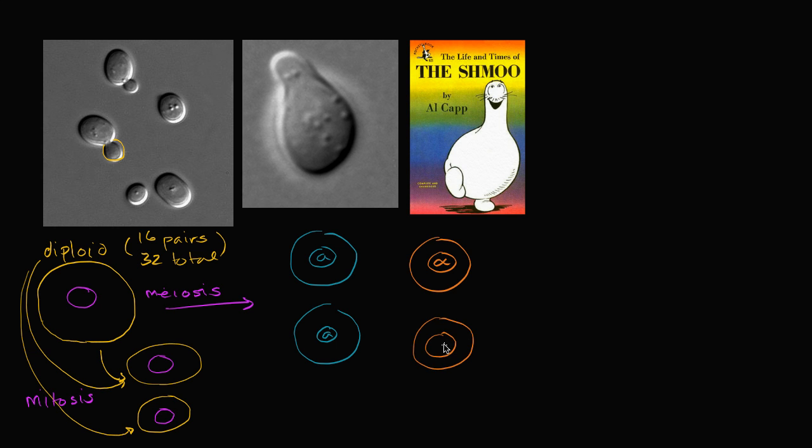And all four of these are going to come through meiosis from this original diploid cell. And since we went through meiosis, each of these are going to be haploid. So these are all going to be haploid. So this is going to be 16 chromosomes total. 16 chromosomes. Chromosomes. Each of them. So they're all going to be haploid.